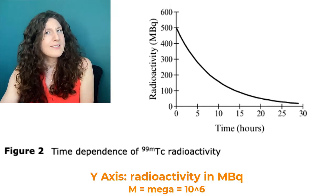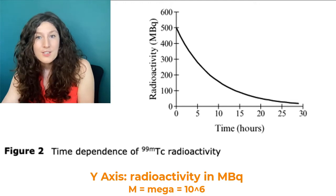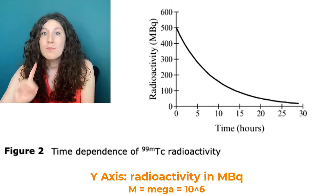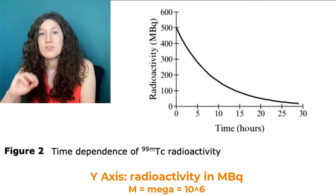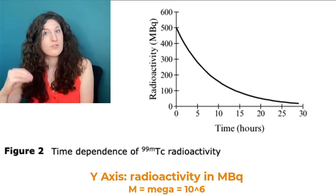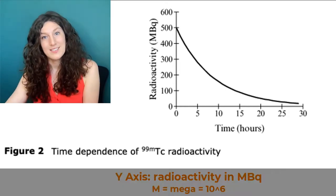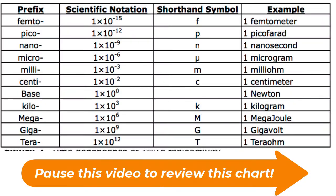The y-axis shows radioactivity in MBq. That unit may be unfamiliar to you — and it should be, it's not on our list. What should be familiar is what that big M is referring to: mega, which is 10 to the 6. You do need to know all the metric prefixes. Here's a chart of the metric prefixes you'll be expected to know on test day.